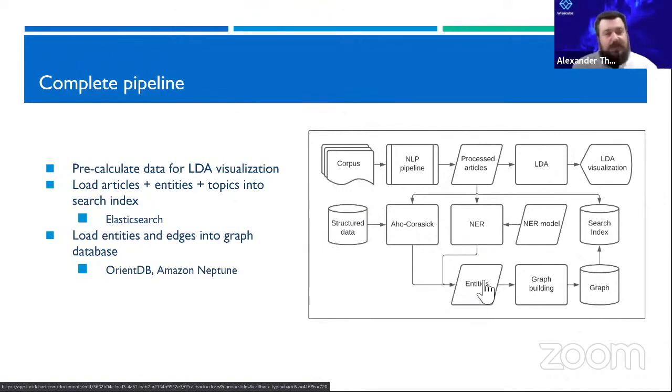From there, we have our documents and our entities and we can build our graph. We store that in a graph database, like OrientDB or Amazon Neptune. We store our documents, along with the entities discovered in them, in a search index like Elasticsearch. Now we have our app.